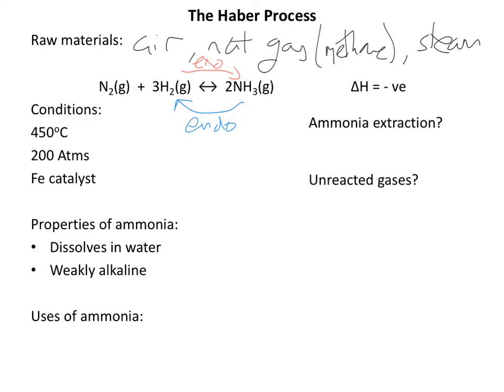What we do is cool the system down, and the ammonia condenses — it forms a liquid. That means it's easy to separate from the remaining nitrogen and hydrogen, because the ammonia is a liquid and we can just tap it off. Obviously we've still got leftover nitrogen and hydrogen, and we've gone to great trouble to get that hydrogen by reacting our natural gas with the steam. So our unreacted gases are recycled.